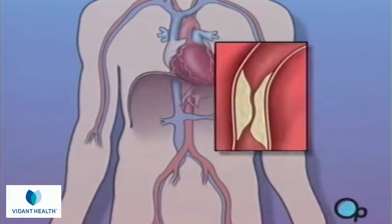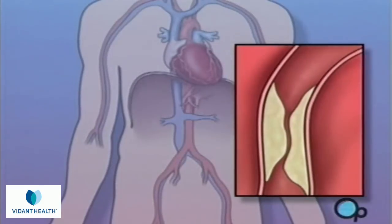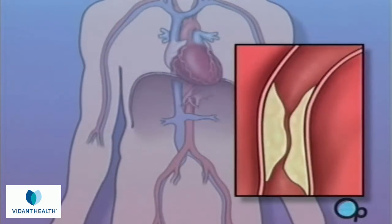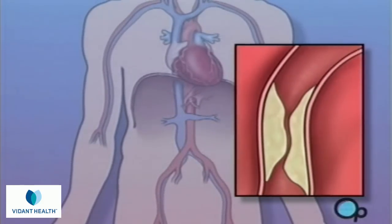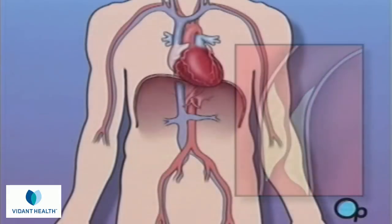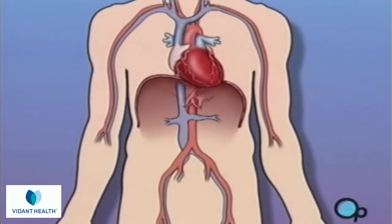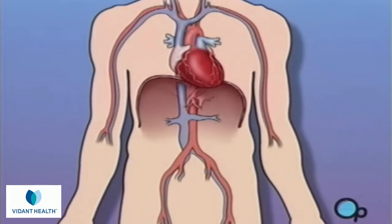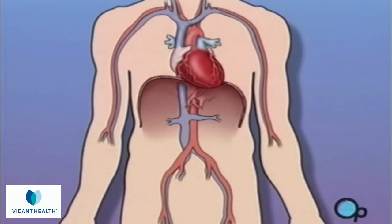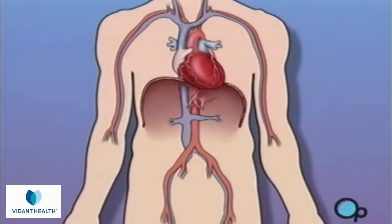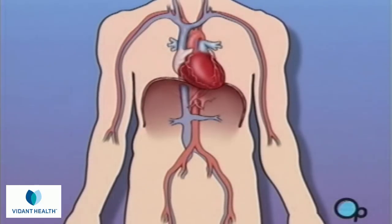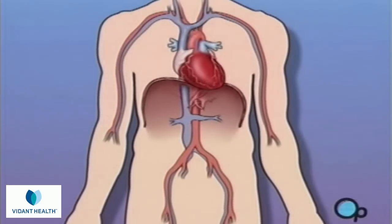Sometimes these blood vessels can narrow or become blocked by plaque deposits, restricting normal blood flow. In simple terms, a balloon angioplasty with stent insertion is a procedure used to increase the amount of blood flowing through the coronary artery.